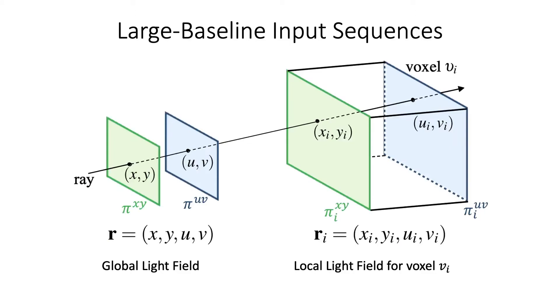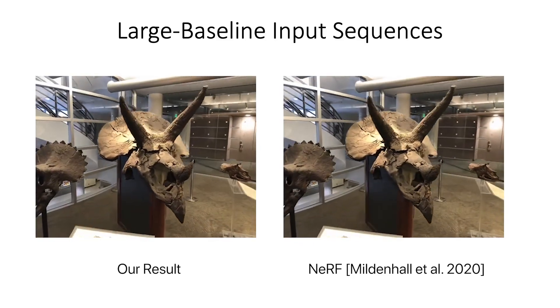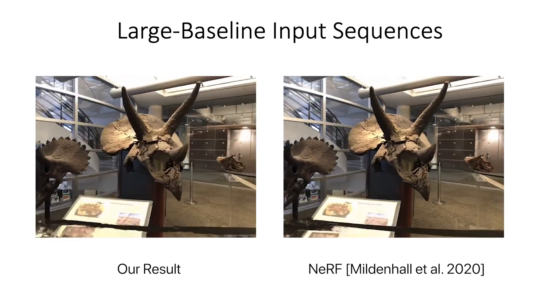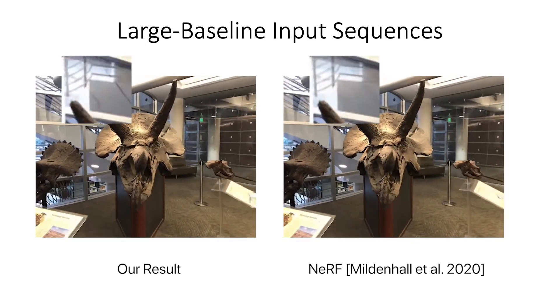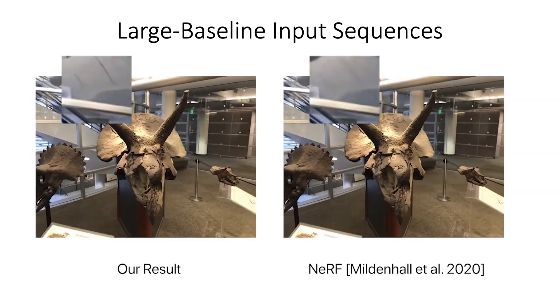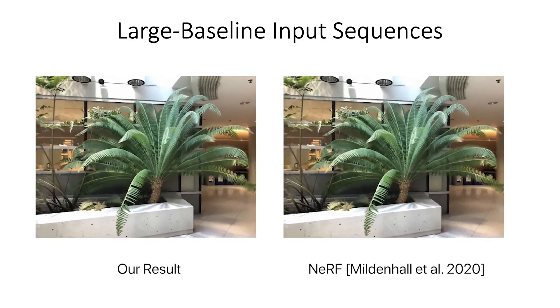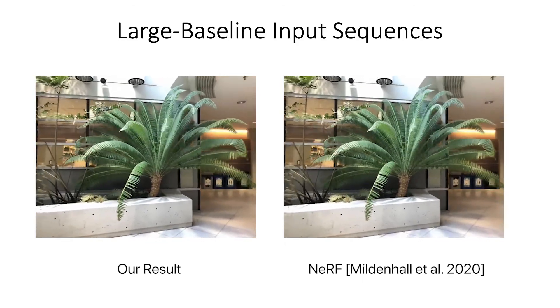In order to handle large baseline input sequences, we learn a voxel grid of local light fields, each with their own ray space embedding network. With this approach, we achieve better sharpness than NeRF and better reproduce view dependence for large baseline inputs, such as those from NeRF's real forward-facing dataset, all while requiring far fewer neural network evaluations per pixel.